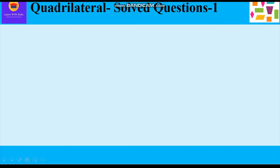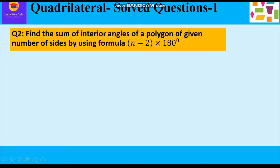Now let's take up question number 2: find the sum of interior angles of a polygon of a given number of sides using the formula (n − 2) × 180°, where n stands for number of sides. Unlike question 1, which used triangle division, here we apply this formula directly.